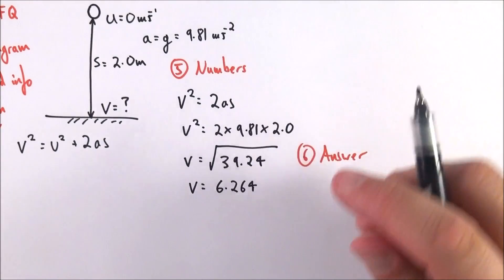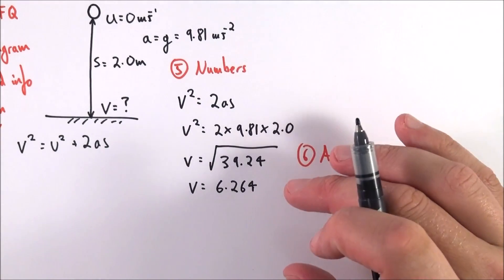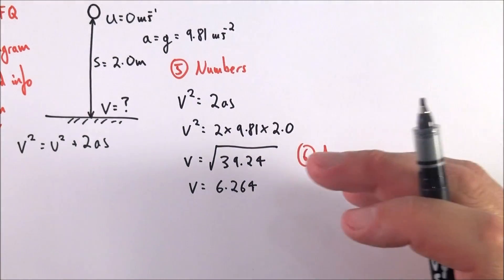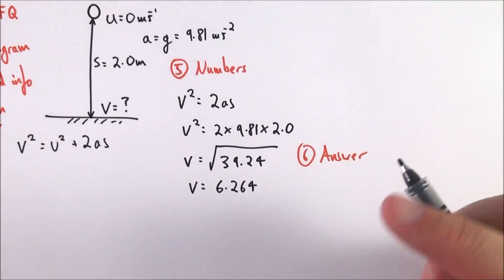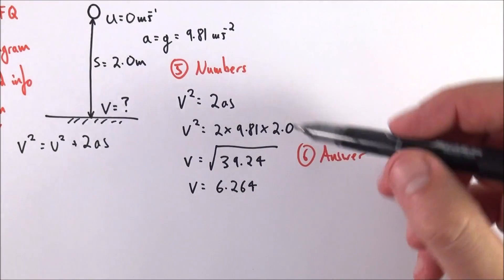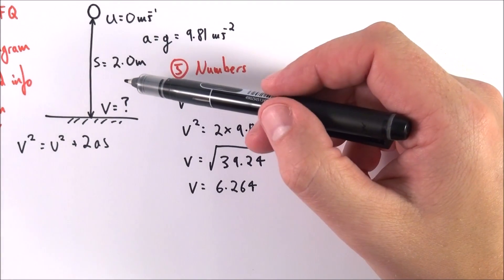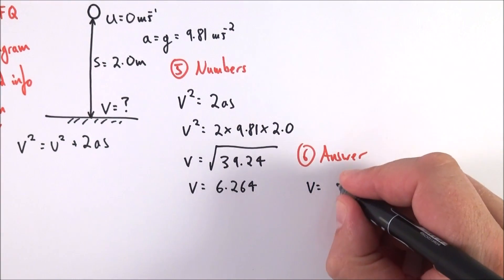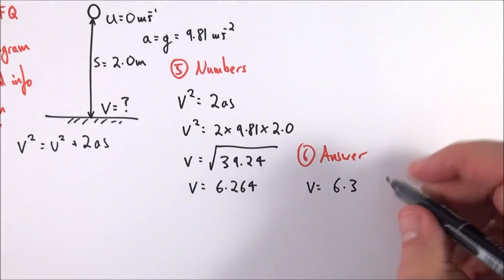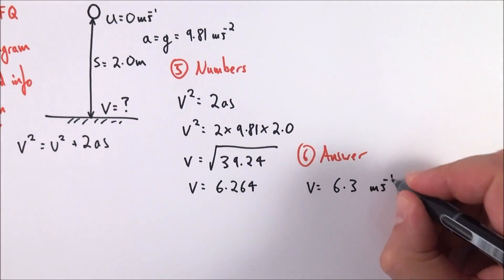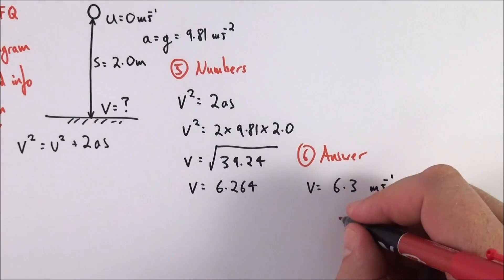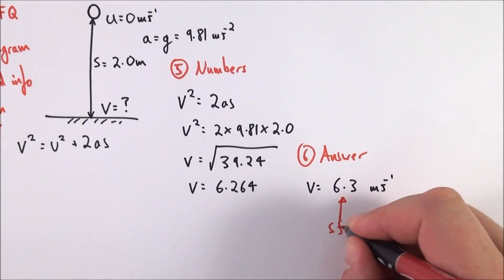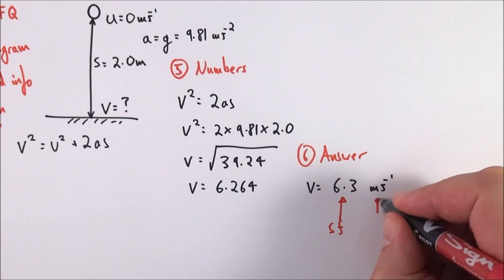When I actually write down my answer, I need to make sure I use an appropriate amount of significant figures as related to what was in the question and also give my units at the end. Because the height was 2.0 meters, that's two significant figures, and therefore my final velocity should be equal to 6.3 meters per second. I have the correct amount of significant figures and my units.